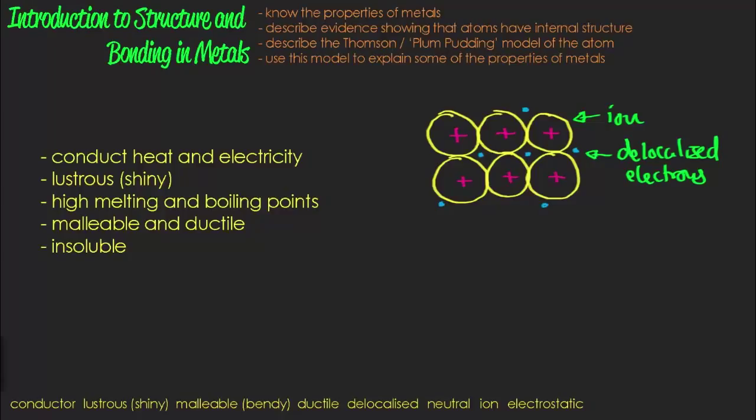And the first thing on our list that we have is that metals conduct heat and electricity. And we can explain that in the sense that the electrons are able to carry the thermal energy through the lattice and allow the charge to move. So we can say that the current is carried by delocalised electrons. Can we explain why metals are shiny using this model? Not really. So I mean this is a limitation of this model.